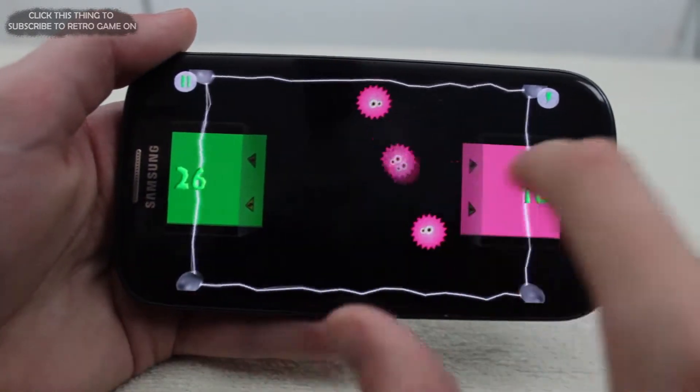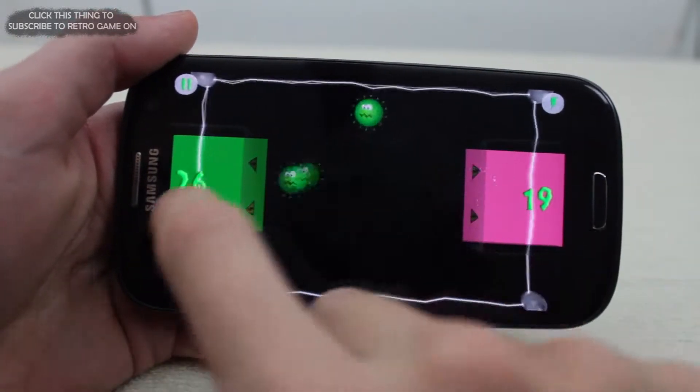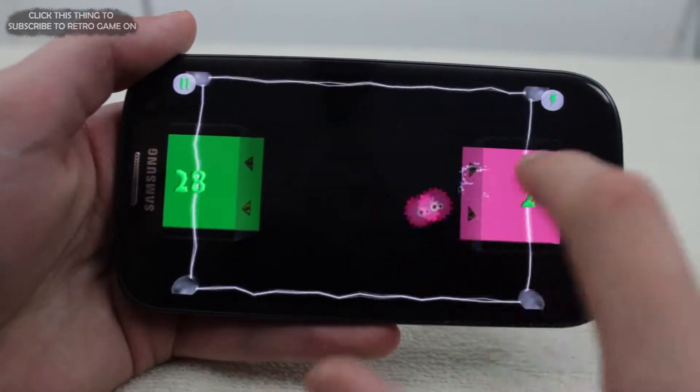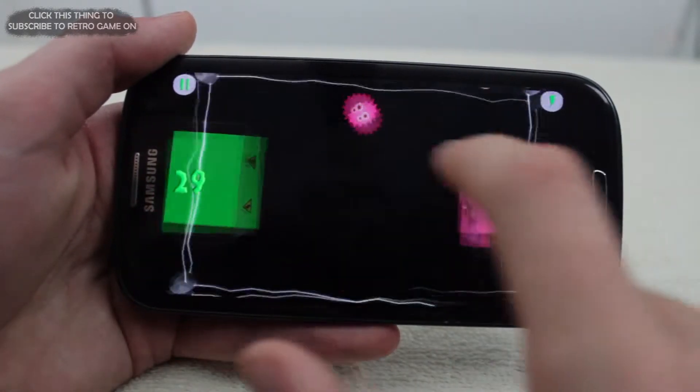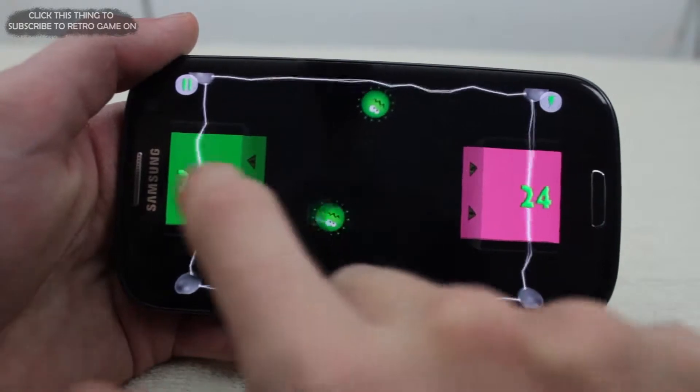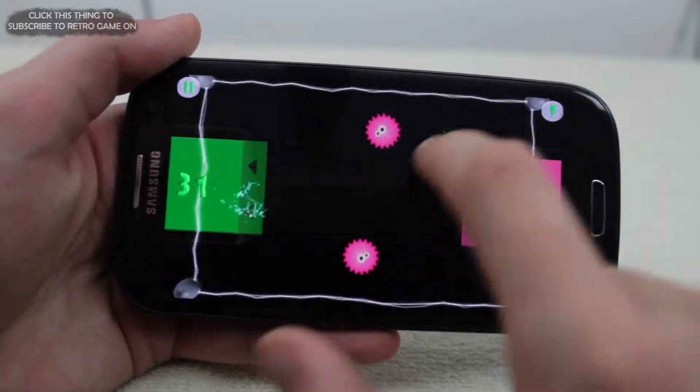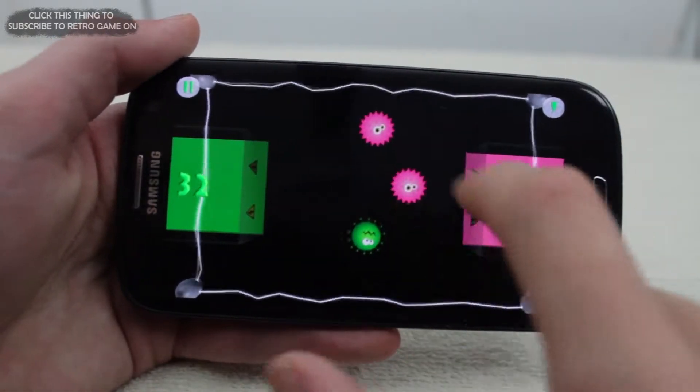Luckily there are some handy electric fences that the germs can be dragged into to eliminate them. In easy mode there are two different types of germs and two different color-coded areas that will cause their extermination. Each germ must be thrown into the correctly colored electric fence, or the round will be over.